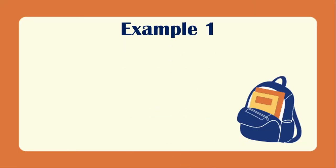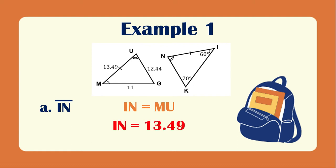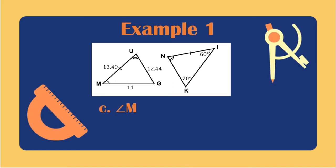Let's have example number one. We need to find IN. Looking at the figure, IN equals MU, so IN equals 13.49. For letter B, we find IK. From the illustration, IK equals MG. Since MG is 11, IK is also 11. For letter C, using the same figure, we solve for the measurement of angle M. The measurement of angle M equals the measurement of angle I. Since angle I is 60 degrees, angle M is also 60 degrees.